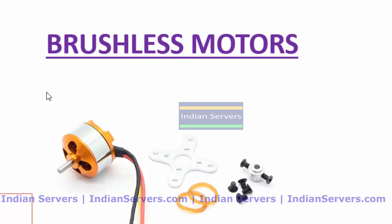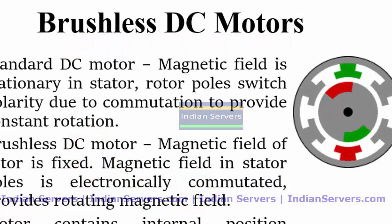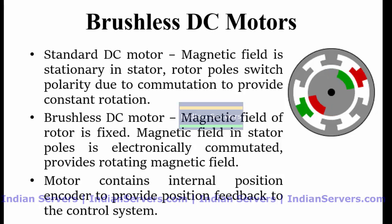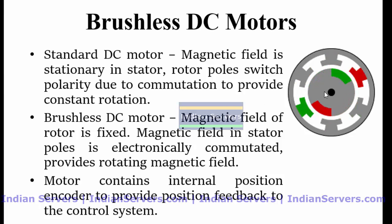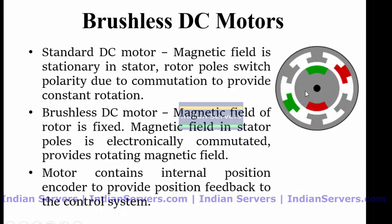Now we will see how the BLDC motor works. A BLDC motor does not have any brushes. There are two important parts: the stator and the rotor. The rotor is the rotating part and the stator is the fixed part. Whenever we supply power to the stator, it acts as an electromagnet and helps the rotor to rotate. There is no physical contact between stator and rotor, and there are no brushes. To control the speed of this motor, we use speed controllers.